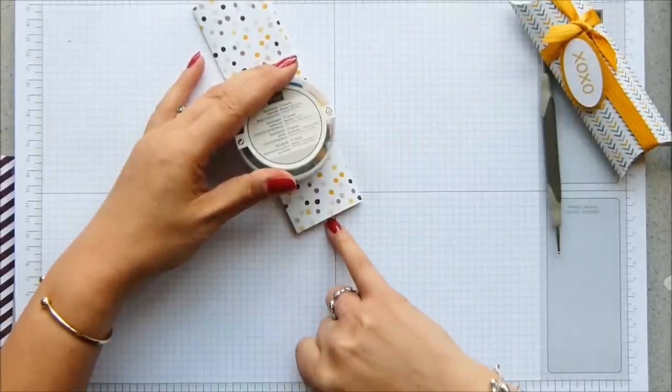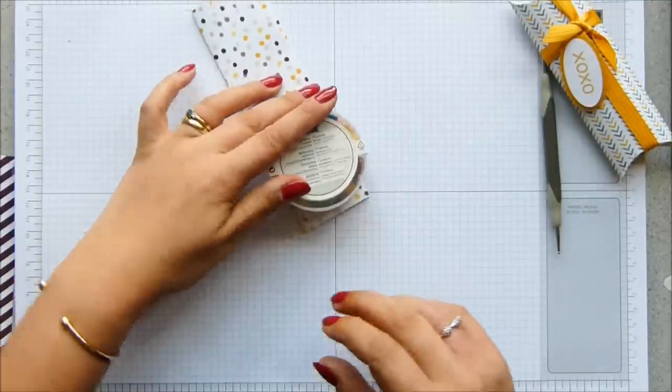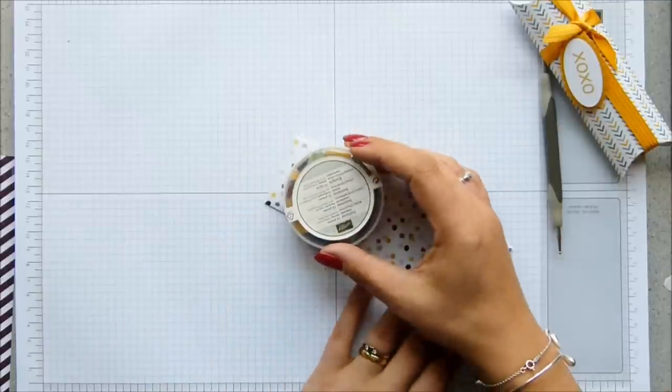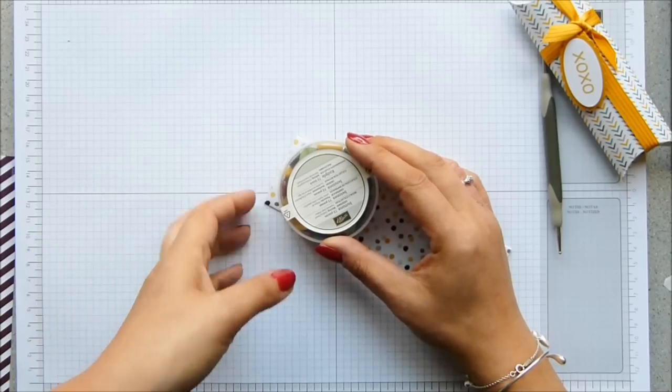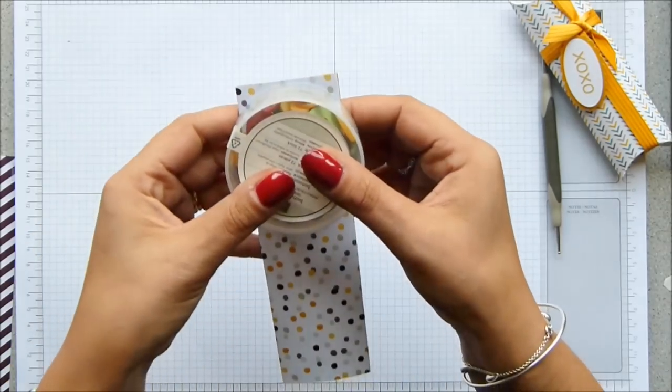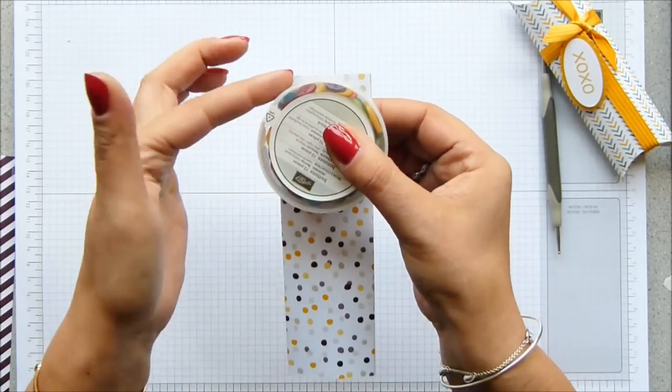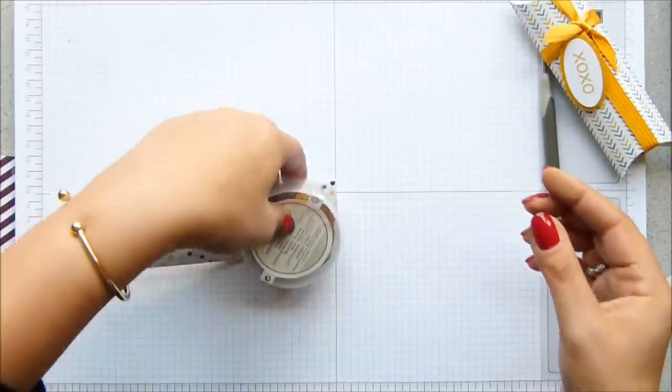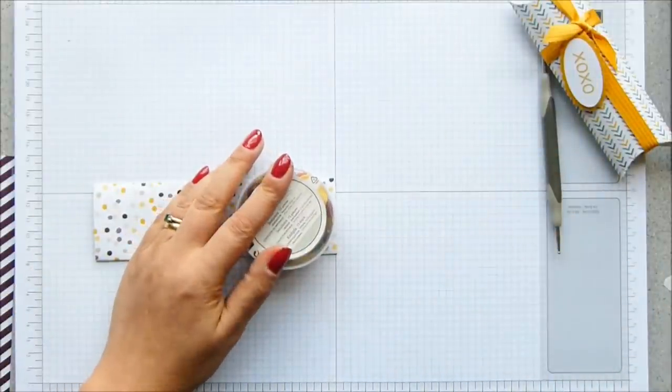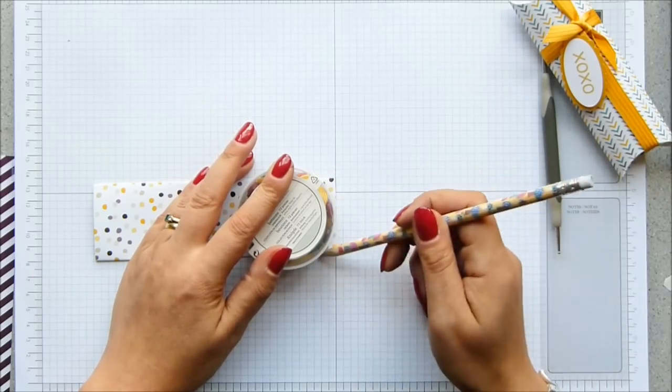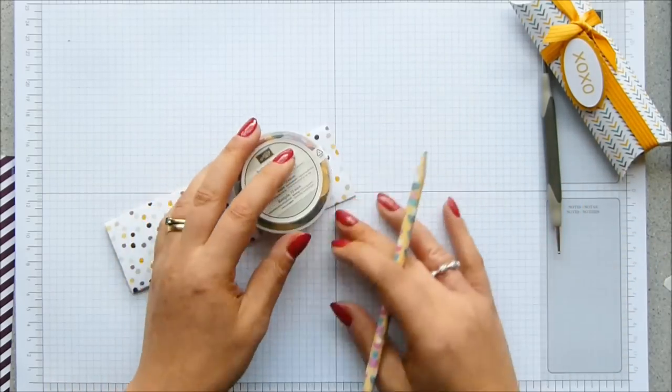What you need to do is line this edge up here with the top of your paper and you will have a slope. Line it up there so that you've got a slope there and there. Grab a pencil and lightly draw around, and then the same on the other end.